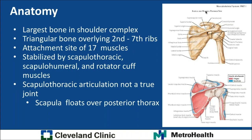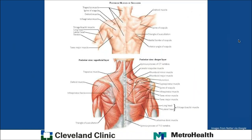Because this is an area of the body we don't think about all that often and certainly don't operate on all that often, I'm going to review the anatomy. The scapula itself is the largest bone in the shoulder complex — a roughly triangular bone overlying the second to seventh ribs. Importantly, it's the attachment site of at least 17 muscles, stabilized by at least three different groups: the scapulothoracic, scapulohumeral, and rotator cuff muscles. The scapulothoracic articulation is not actually a true joint; rather, the scapula floats over the posterior thorax and is held and mobilized by those muscles.